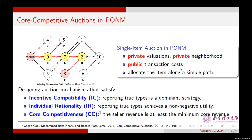In auction theory, a core is a stable outcome where no subgroup of the participants can achieve better results for themselves. Auctions with core revenue guarantees are particularly important because they not only generate optimized revenue for the seller, but also provide an efficient and stable environment for the participants.